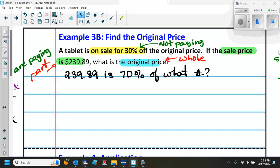If 30% is how much we're not paying, we have to find out how much we are paying. So we need to subtract this 30% from 100%. That's why we are looking at 70% here.